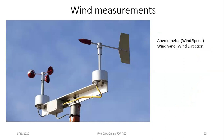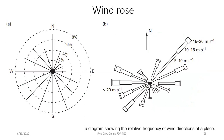Wind rose diagrams plot wind speed and direction data, showing how often wind blows from each direction and at what speed. This is very useful for siting wind power plants, as it identifies which direction and time period have the highest wind speeds and how frequently those speeds occur.